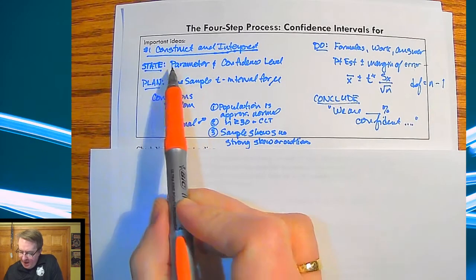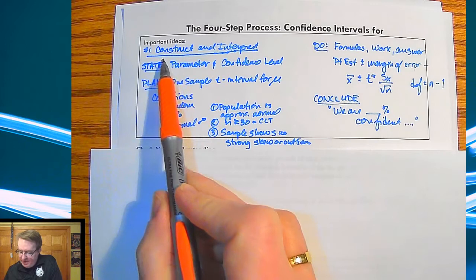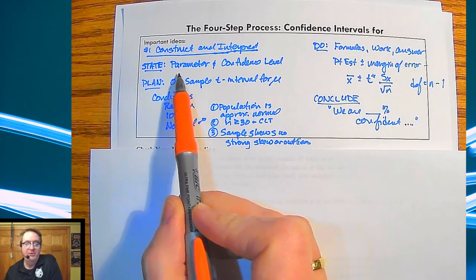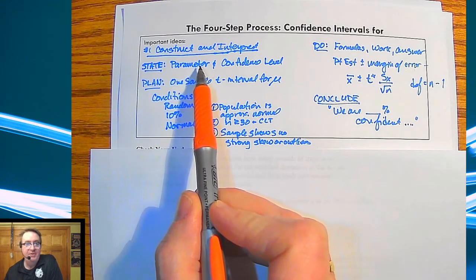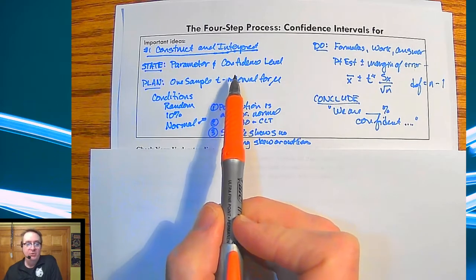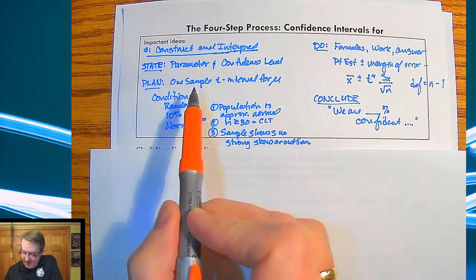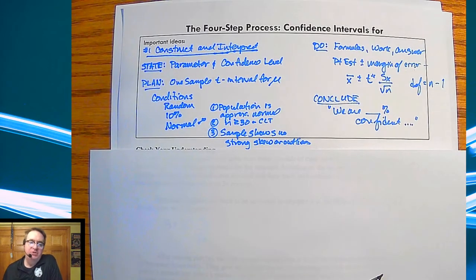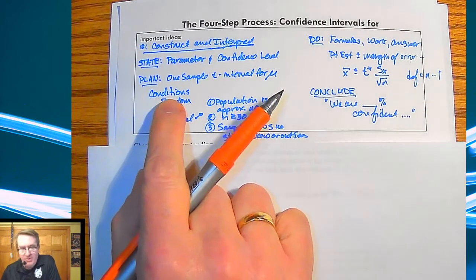So when you need to construct and interpret a confidence interval, you need to go through and state what you're doing first. What's the parameter that you're trying to find the interval for, and what confidence level are you doing this? The plan is called a one sample T interval for mu, which is our mean.